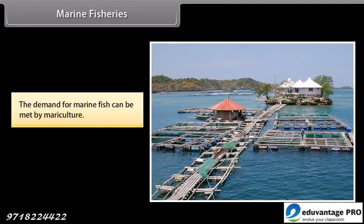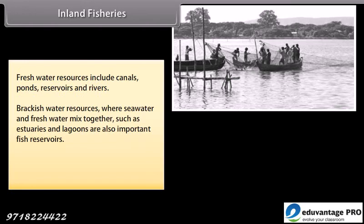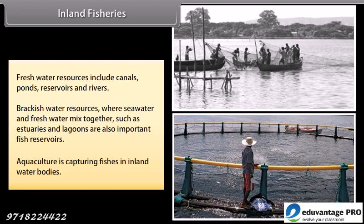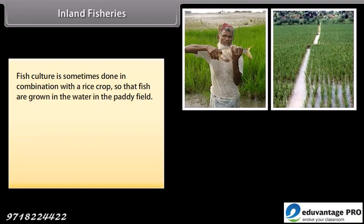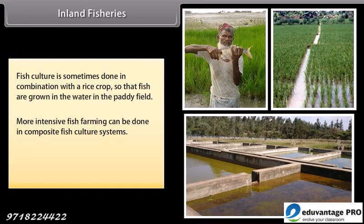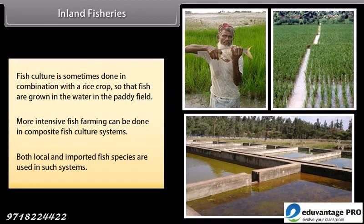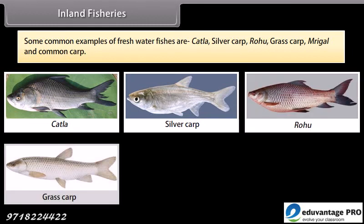The demand for marine fish can be met by mariculture. Inland fisheries. Fresh water resources include canals, ponds, reservoirs and rivers. Brackish water resources, where seawater and fresh water mix together, such as estuaries and lagoons, are also important fish reservoirs. Aquaculture is the capturing of fishes in inland water bodies. Fish culture is sometimes done in combination with the rice crop, so that fish are grown in the water in the paddy field. More intensive fish farming can be done in composite fish culture systems, where both local and imported fish species are used. Common examples of fresh water fishes are katla, silver carp, rohu, grass carp, mrigal and common carp.